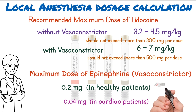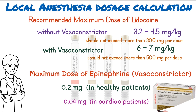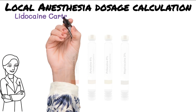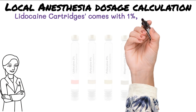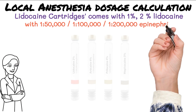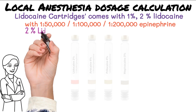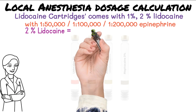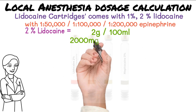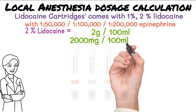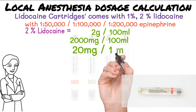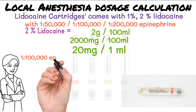Local anesthesia cartridges are labeled as one percent or two percent lidocaine with 1:50,000, 1:100,000, or 1:200,000 epinephrine. Two percent lidocaine means it has two grams of lidocaine per 100 milliliters, which equals 2000 milligrams per 100 milliliters, or 20 milligrams per milliliter of local anesthesia.